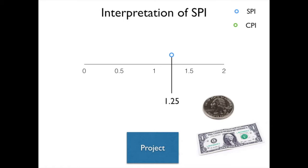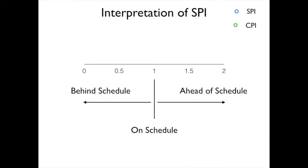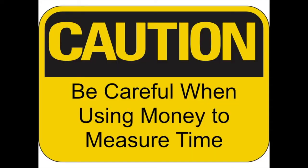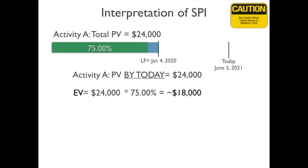Now, as I said, we need to be careful when we're interpreting SPI because we are using money to measure time. Let's take a look at where that can come into play or where that can cause a problem. Let's say that we have a particular task. We have this planned value of $24,000, and the planned value by today was $24,000. We had expected to have this done by now.